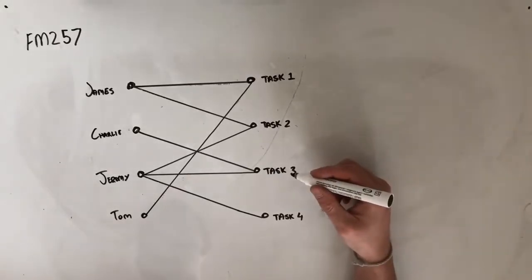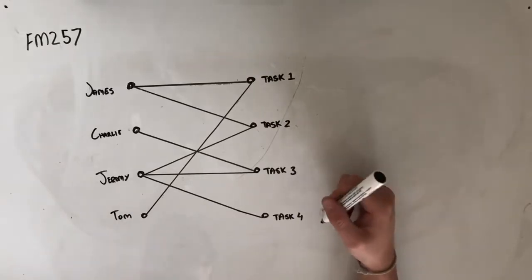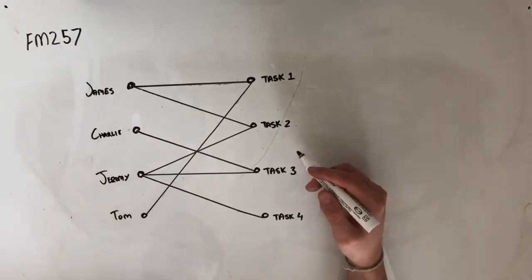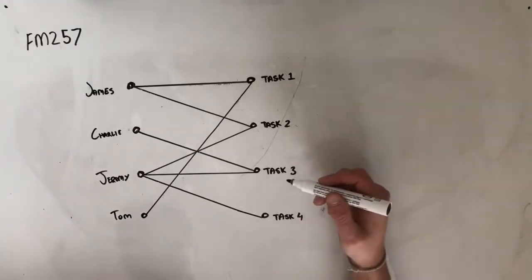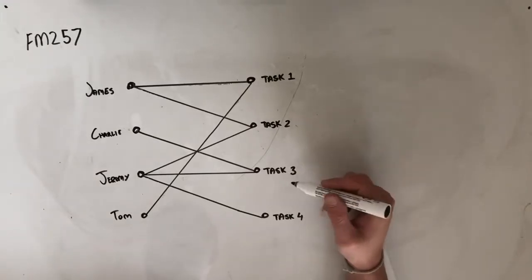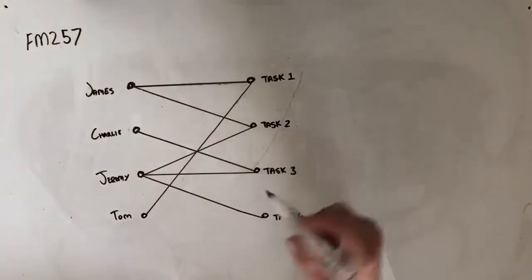Hey guys, welcome to question FM 257 of the Further Maths Fortify Study Guide. This question reads, James, Charlie, Jeremy and Tom are each going to be allocated one particular task in the renovation of a backyard. The bipartite graph below shows which tasks each person is able to complete. And then we're given this bipartite graph here.